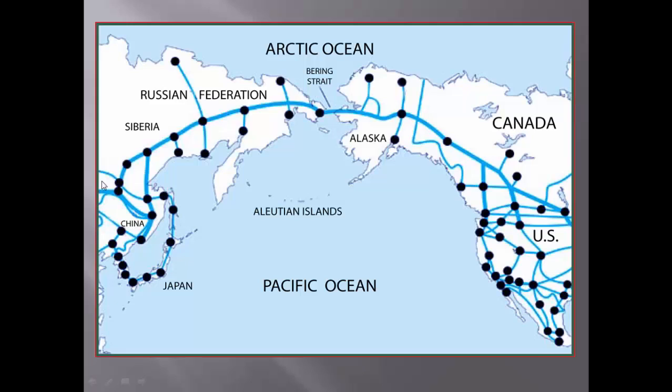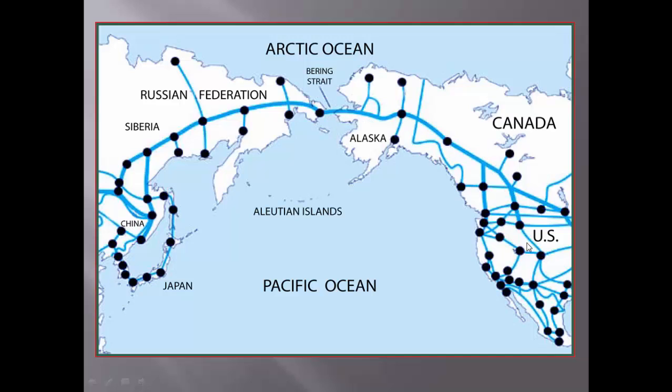This right here was a land bridge. It was iced over, and the peoples that were living here began to migrate or move all the way across these continents, ending up settling in the United States, down in Mexico, and down in Central America. So that's the land bridge.